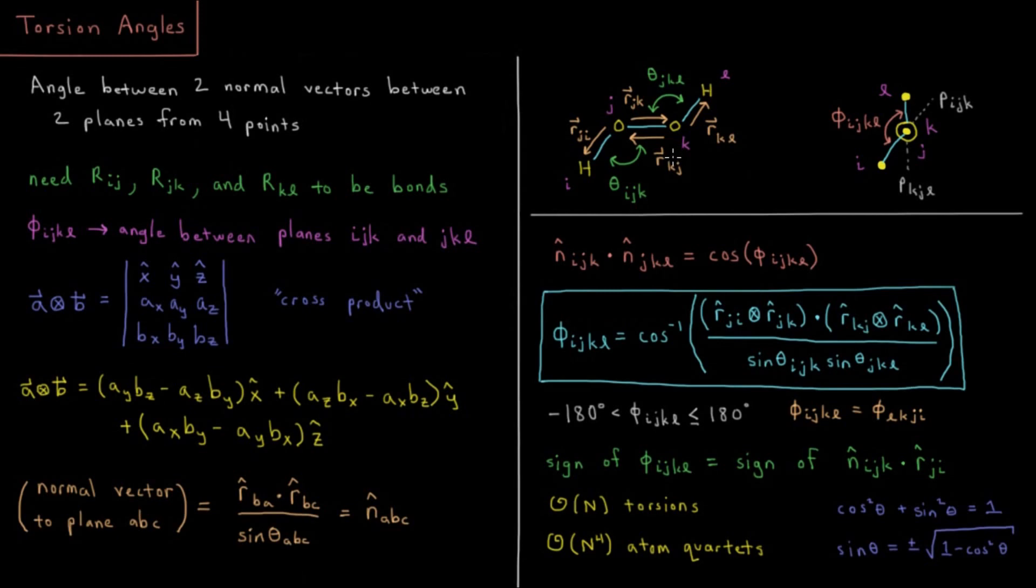But more properly, what we're going to do is say each of those planes has a normal vector, a vector which is perpendicular to that plane. So the perpendicular to this plane would be like this vector, and perpendicular to this plane would be like this vector. So what we're actually computing is the angle between these two normal vectors, vectors that are perpendicular to these two planes. And that forms what we call a torsion angle, also referred to as a dihedral angle.